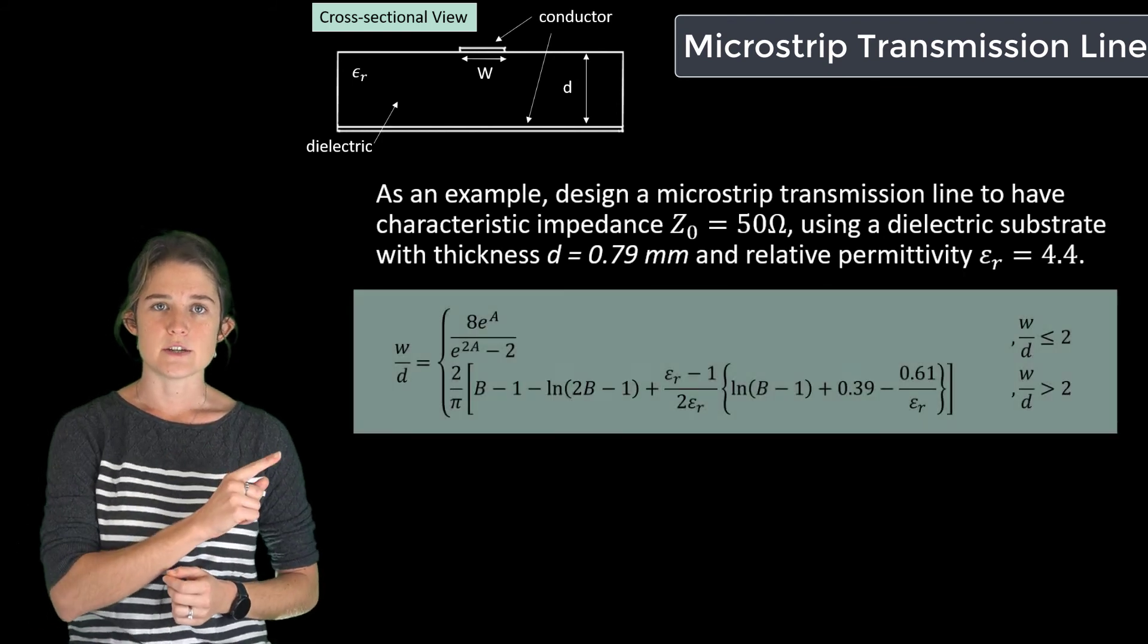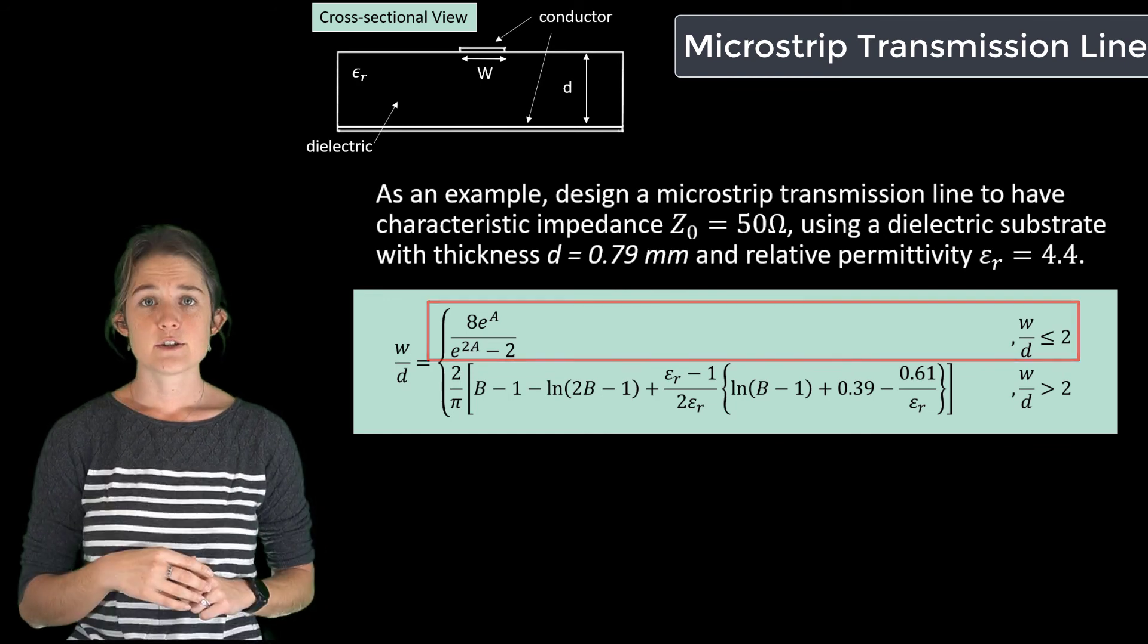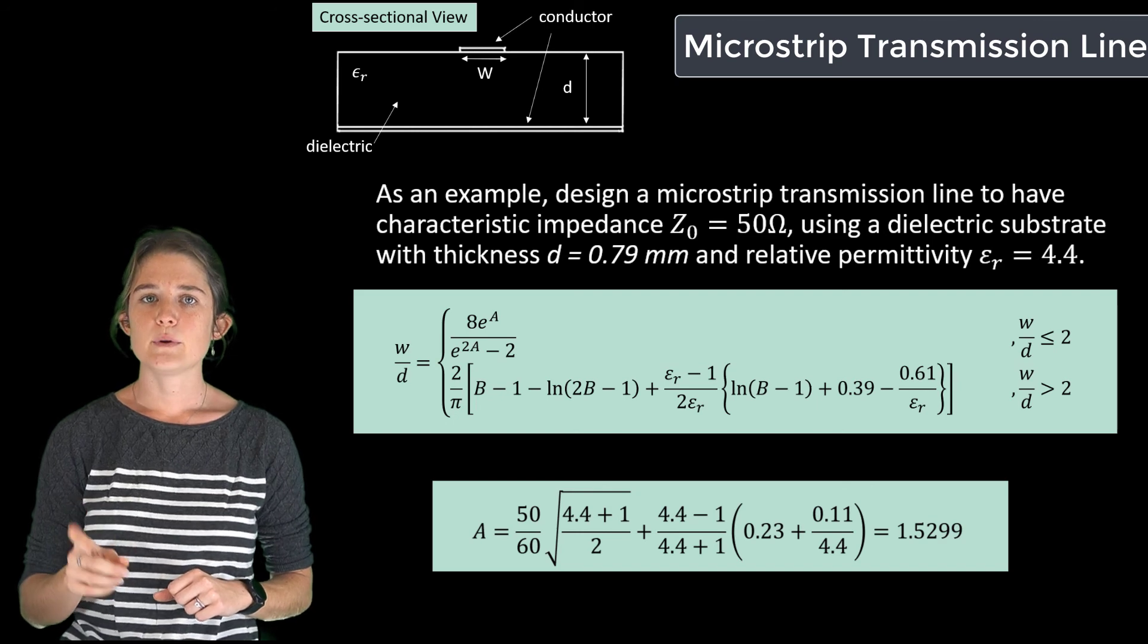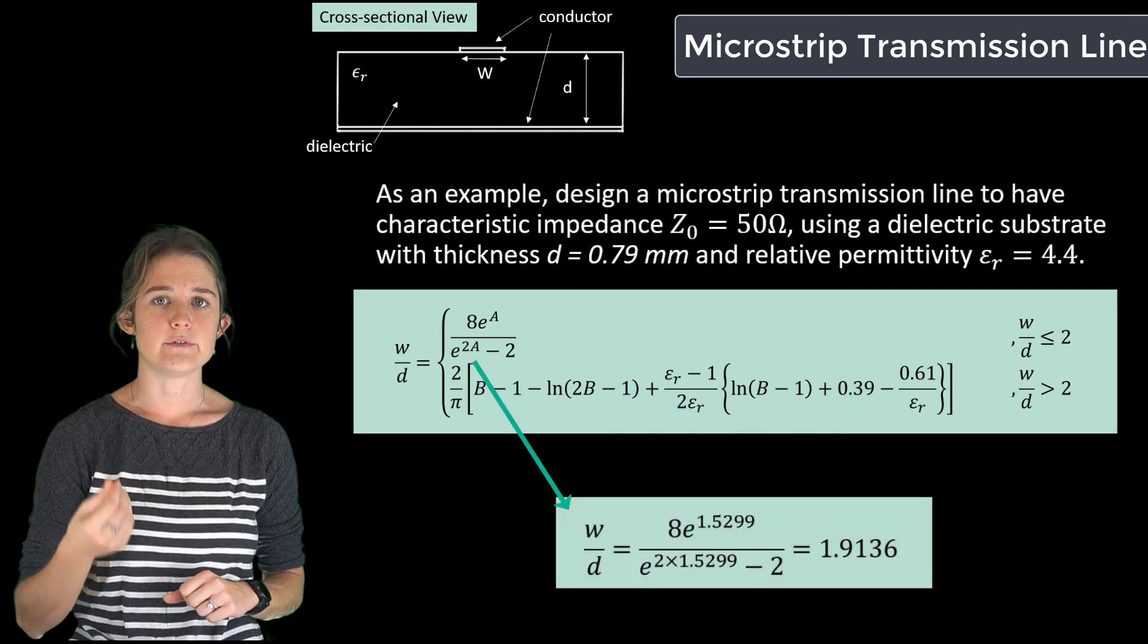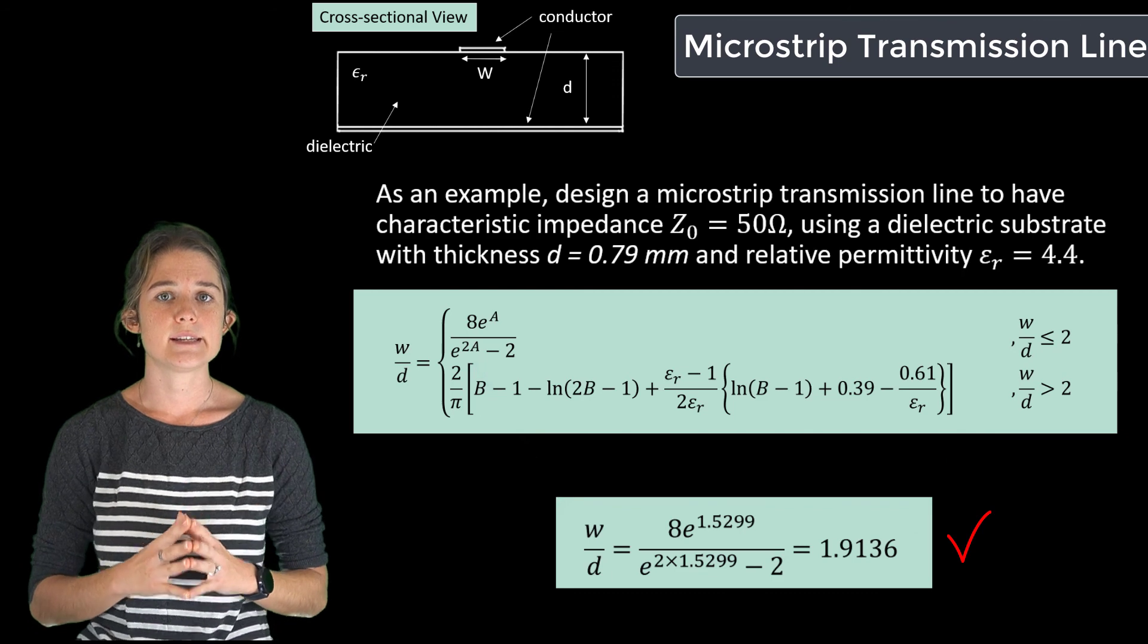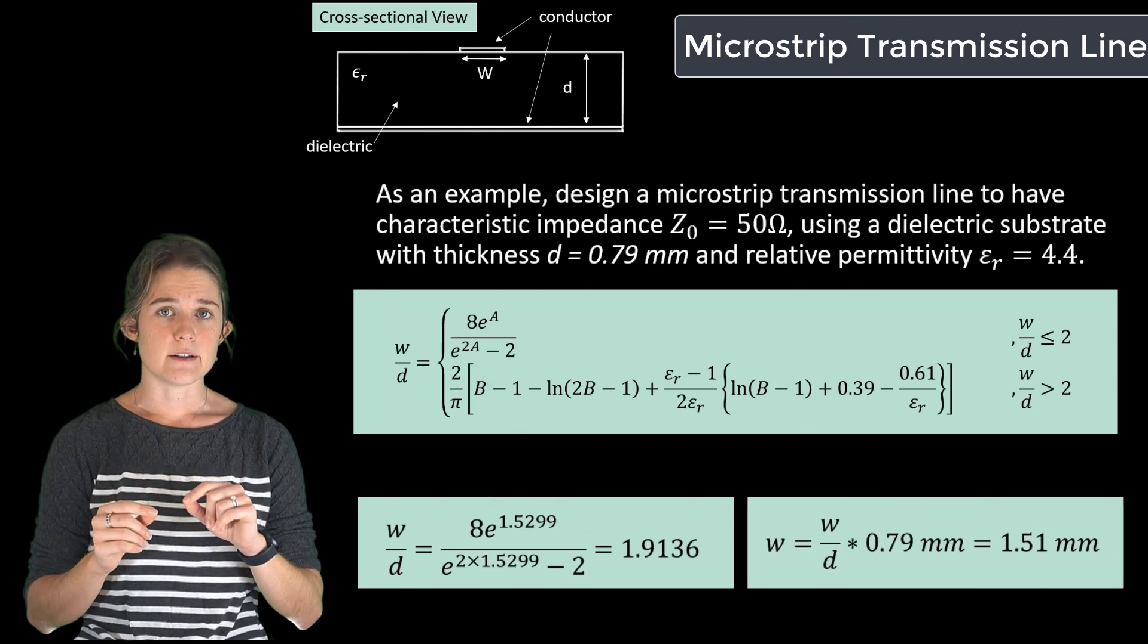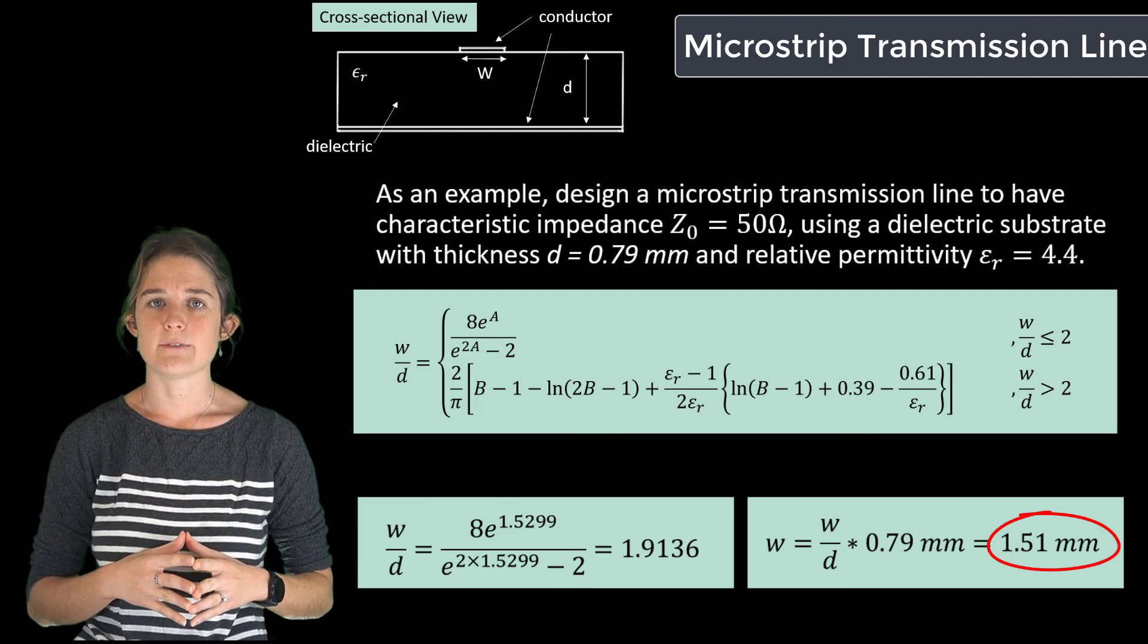We start with this equation, and we're going to guess that w over d is less than 2. So we start out by calculating A, which works out to 1.5299, and then we plug that into the top equation, which gives us a calculated w over d value of 1.9136. This is less than 2, so we're okay to stick with the top equation. Now using our known d value, we can calculate w, which turns out to be 1.51 millimeters.